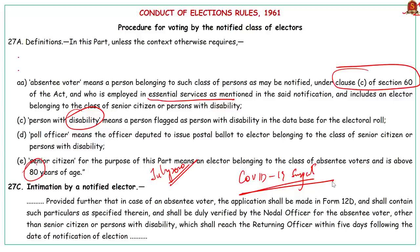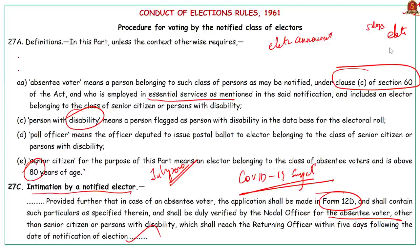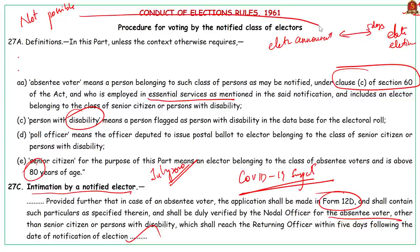To use the postal ballot route, absentee voters must intimate the returning officer by applying with required particulars like age and COVID-19 details. Such applications must reach the returning officer from the date of announcement of election to five days following the date of notification of election. The petition sought the list of possible absentee voters in advance, but Tamil Nadu's Chief Electoral Officer said sharing was not possible as the list is not yet ready, and profiling electors before they file applications may amount to invasion of their privacy.